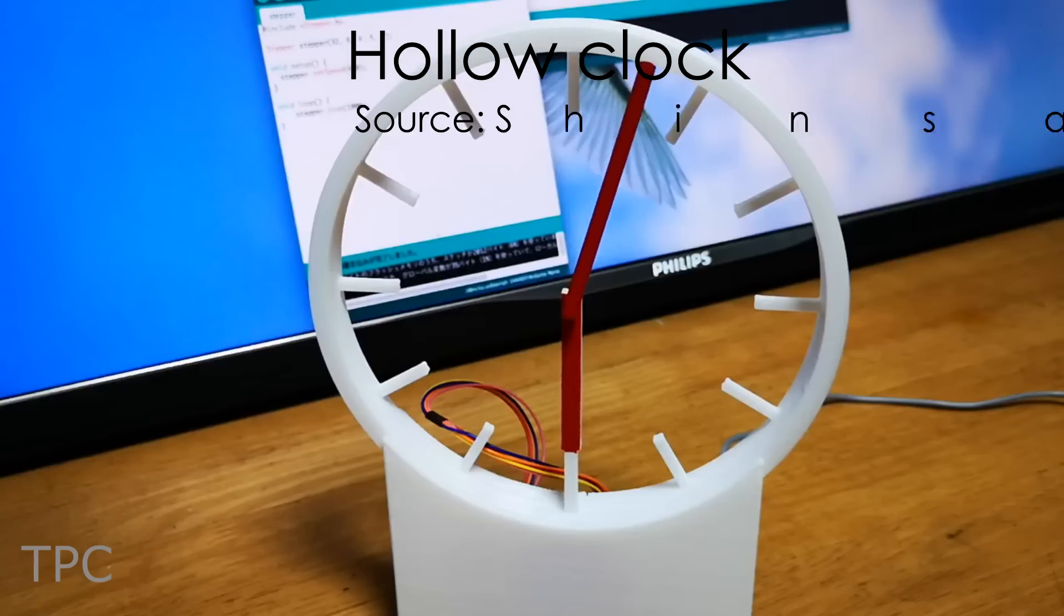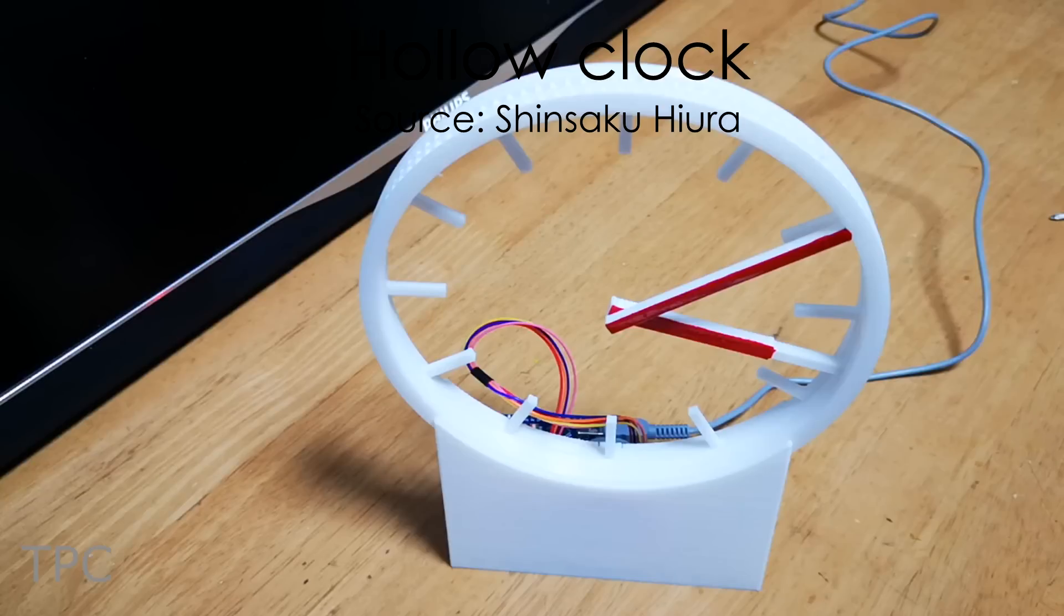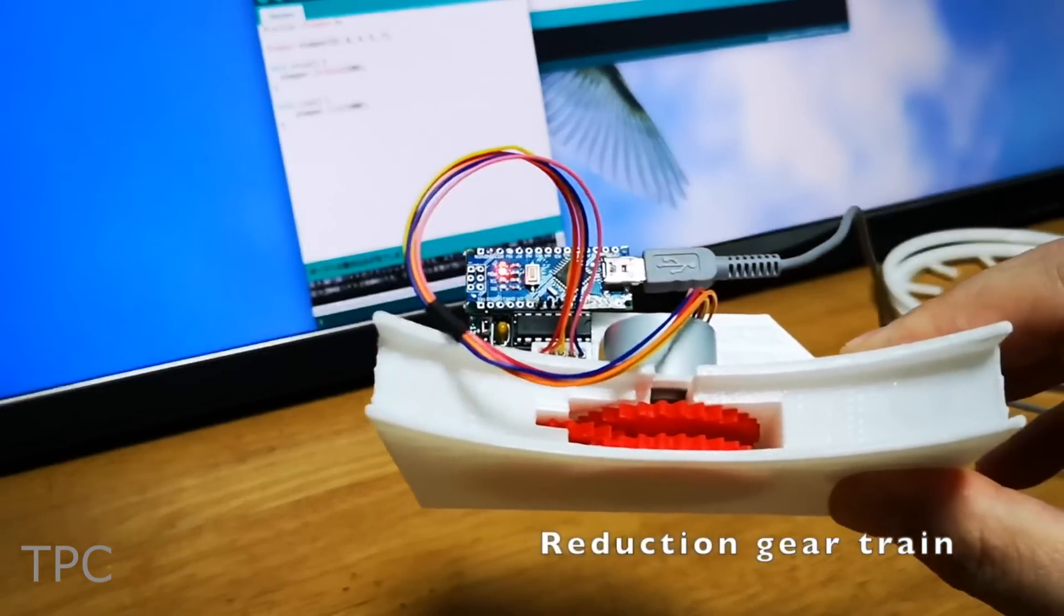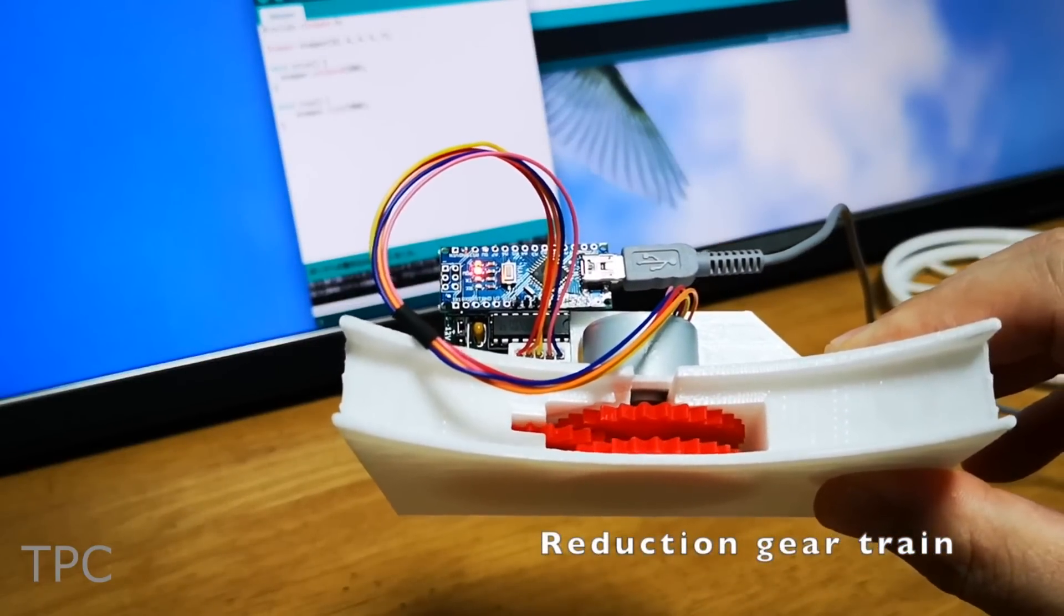Hollow clocks do not have any face, they have an open space with only an hour hand and a minute hand wheel. The hollow clock requires three gears for its operation: a reduction gear, a minute driving gear, and an hour driving gear.